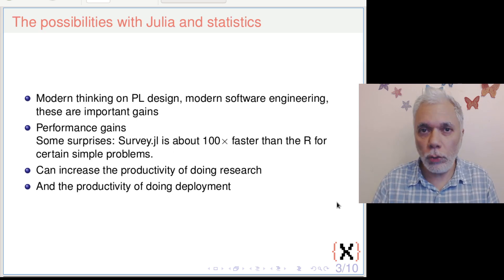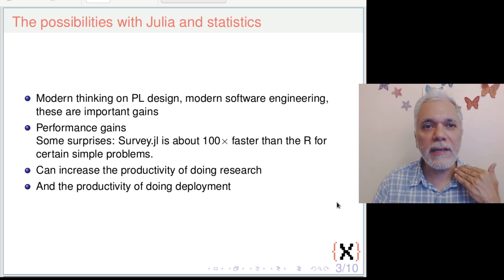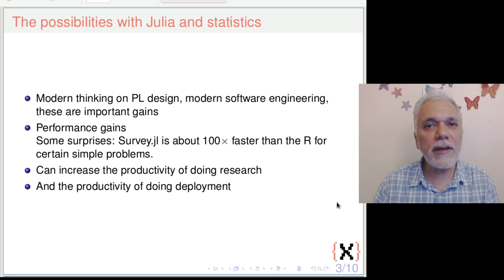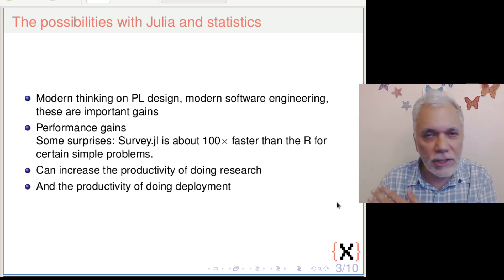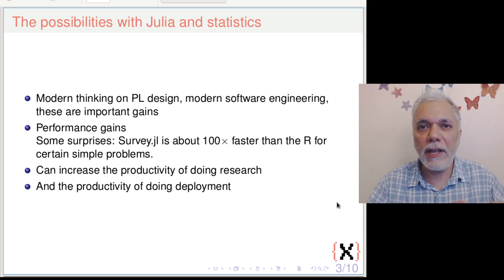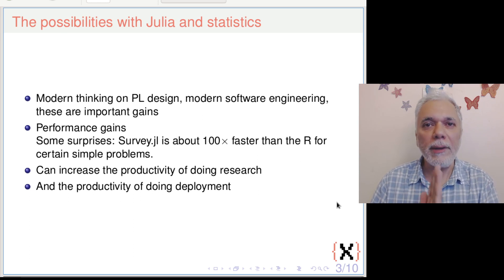What are the possibilities with Julia and how does it shape our thinking for the field of statistics? My sense is that 10-15 years of progress in programming language design and software engineering has gone into Julia. The syntax is clean, it is simple, it is elegant, it is consistent — particularly when you go beyond 10 lines to 50 or 500 lines, the differences are palpable. It's just a cleaner place to be building things.